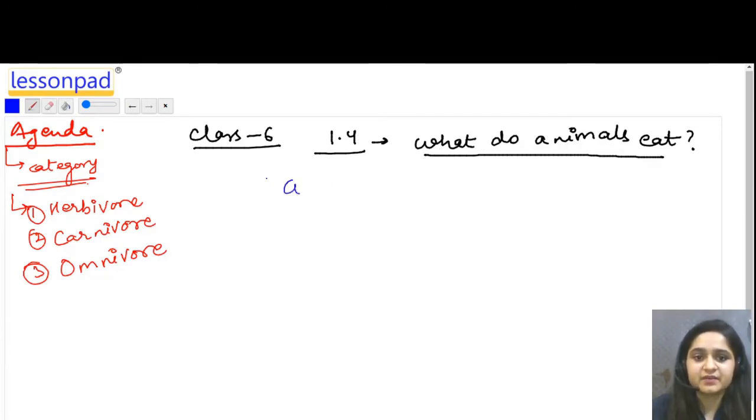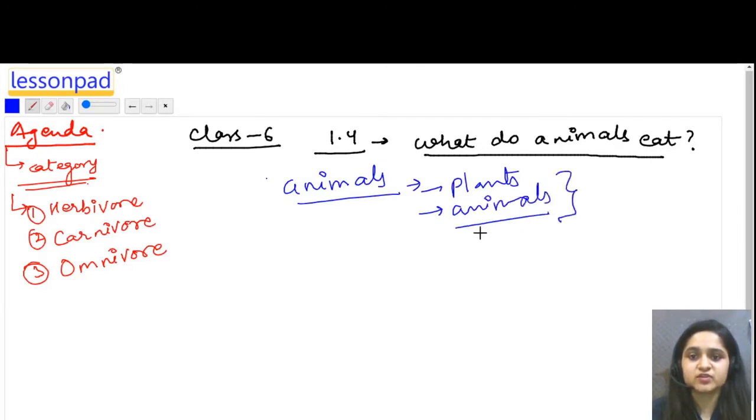We know that some animals eat only plant products, some animals eat only other animals, and there are some that eat both. So now we will study these categories.